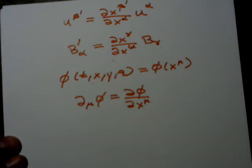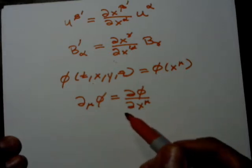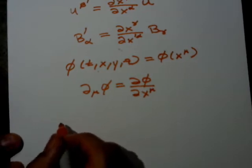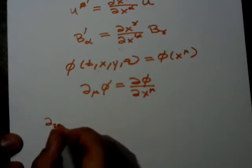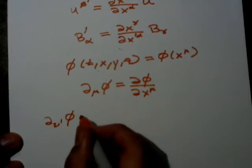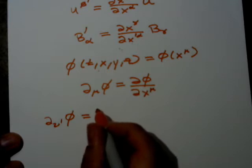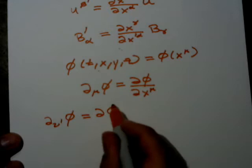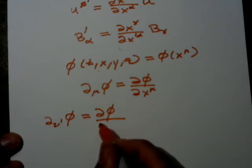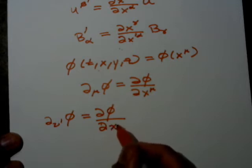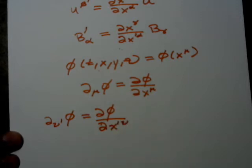According to the chain rule of partial differentiation in calculus, the values of these components transform as follows. We're transforming to our prime coordinate system, so ∂′_ν φ equals, in the regular notation, ∂φ/∂X′^ν.